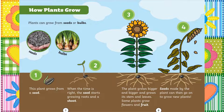Chapter 3: How plants grow. Plants can grow from seeds or bulbs. 1. This plant grows from a seed. 2. When the time is right, the seed starts growing roots and a shoot.